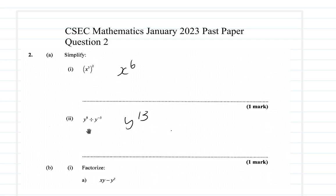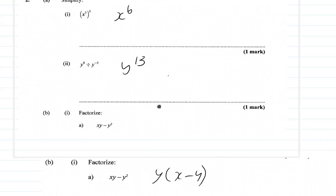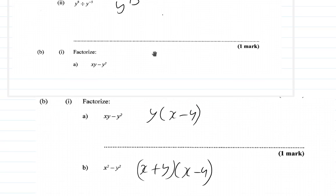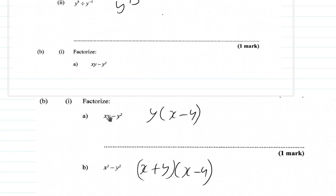The part that says y to the 8th divided by y to the negative 5th is y to the 13th. Then factorize. When you factorize xy minus y squared, you get y times x minus y.